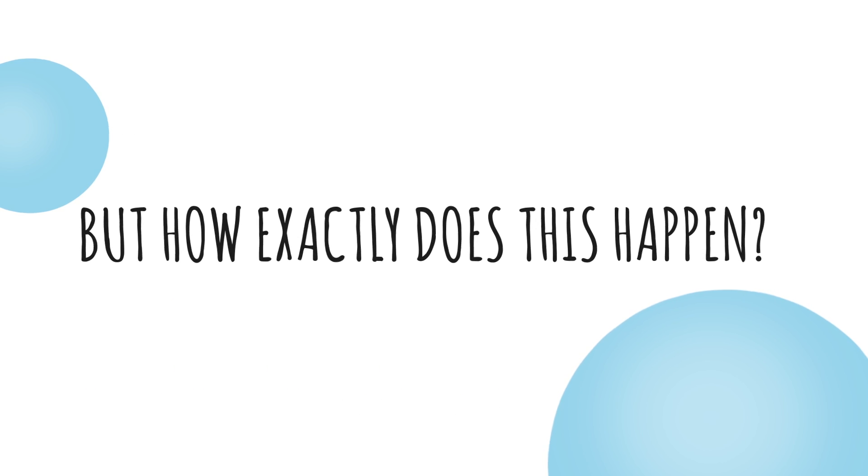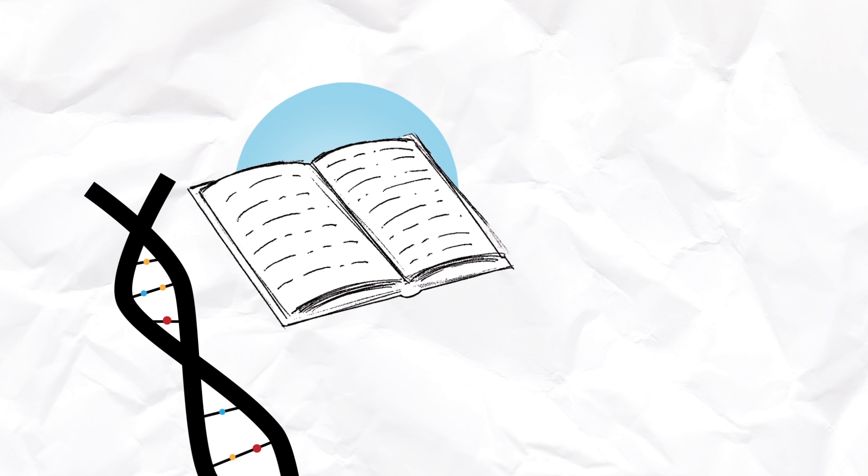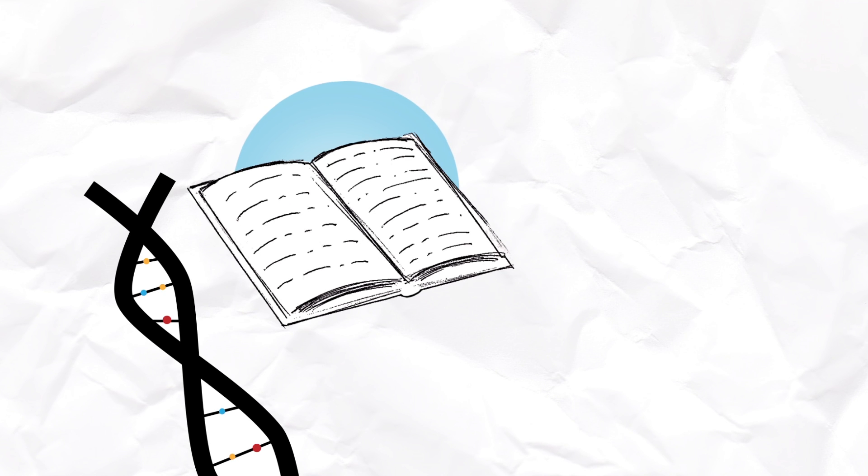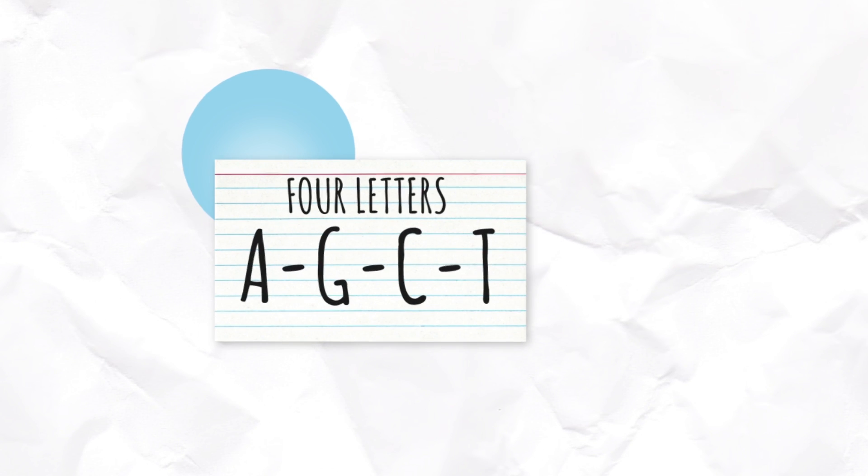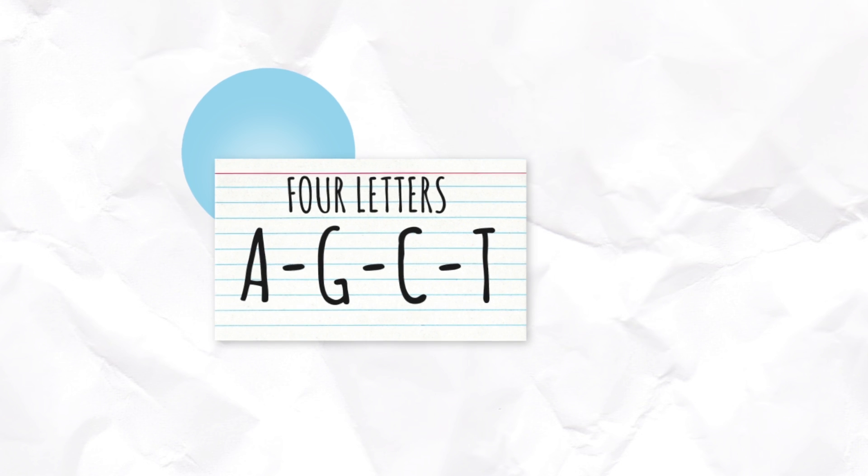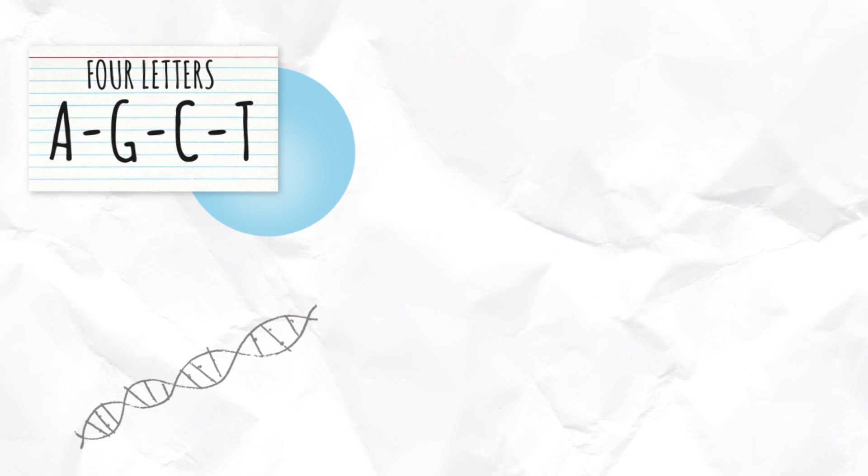But how exactly does this happen? Just like the words on the pages of the encyclopedia, our genes are made up of four letters: A, G, C, and T. These four letters create the genetic code.